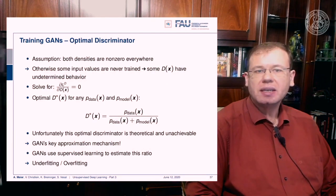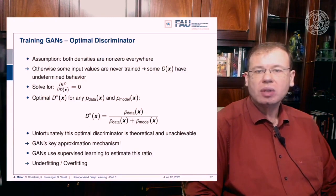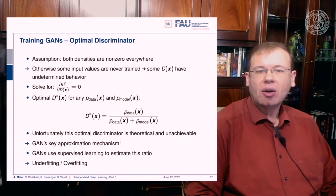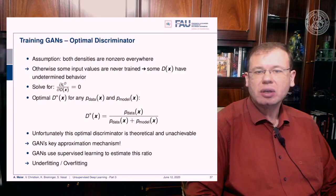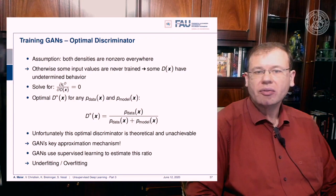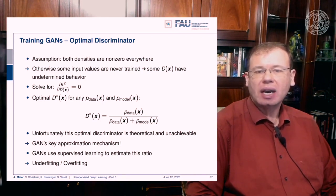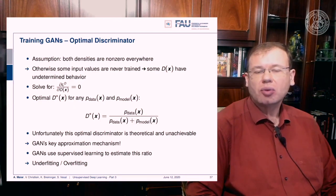For the optimal discriminator, the key assumption is that both densities are non-zero everywhere, because otherwise some input values would never be trained and the discriminator would have undetermined behavior in those areas. Setting the gradient of the discriminator loss to zero, the optimal discriminator for any data distribution and model distribution is: p_data(x) divided by p_data(x) plus p_model(x), over the full input domain. Unfortunately, this optimal discriminator is theoretical and unachievable, so GANs use supervised learning to estimate this ratio, which leads to the problems of underfitting and overfitting.